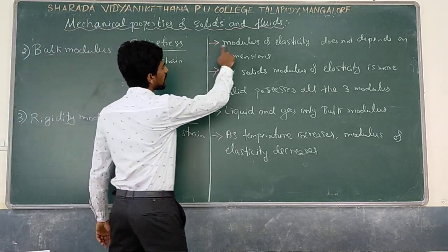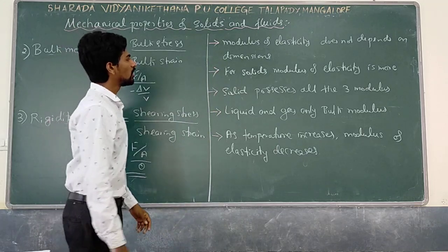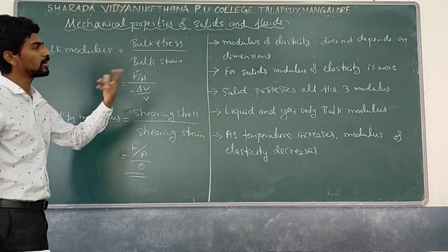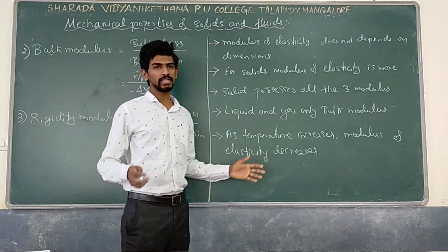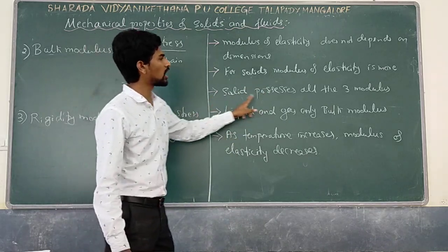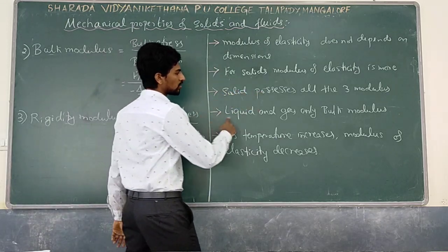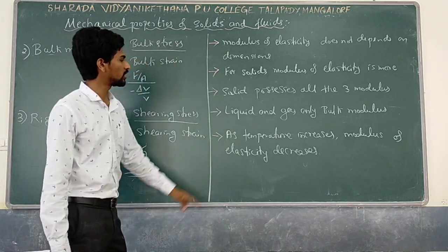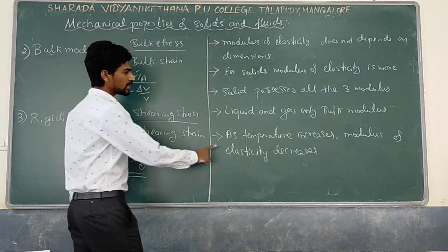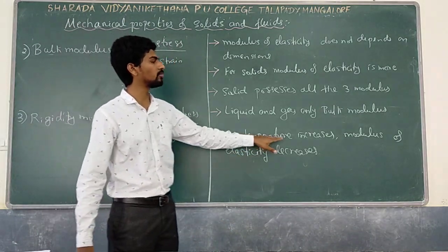The modulus of elasticity does not depend on dimensions — it does not depend on length or area. For solids, the modulus of elasticity is more because it is difficult to change the length. Solids possess all three moduli. Liquids and gases only have bulk modulus, as they have no definite shape. As temperature increases, the modulus of elasticity decreases.